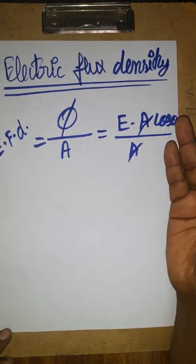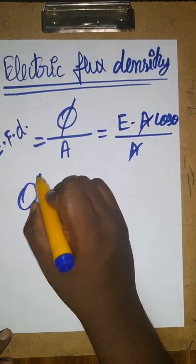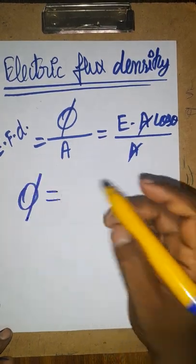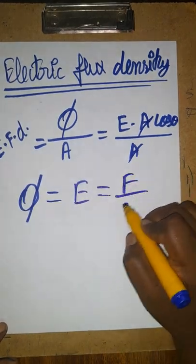When theta is cos 0 degree, we get the maximum. So the electric flux density is equal to electric field. What is electric field? Force per unit charge.